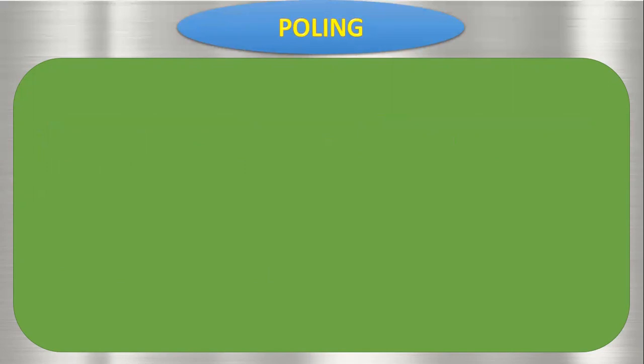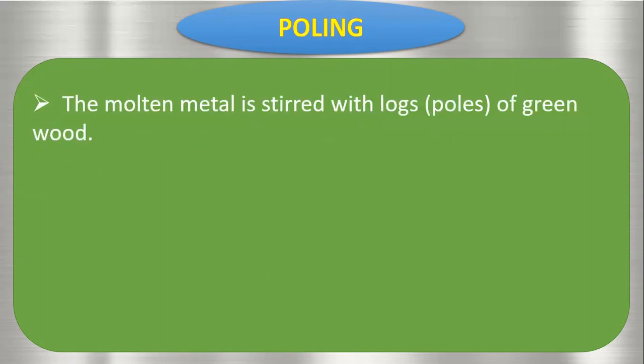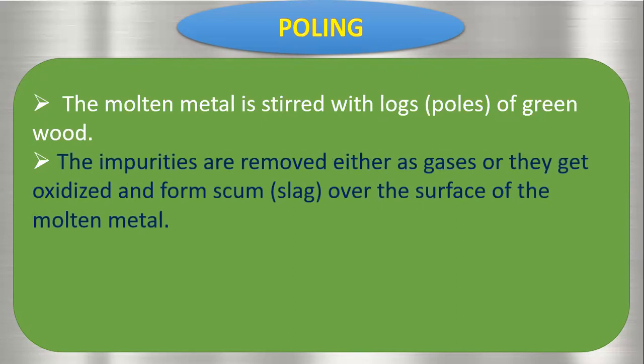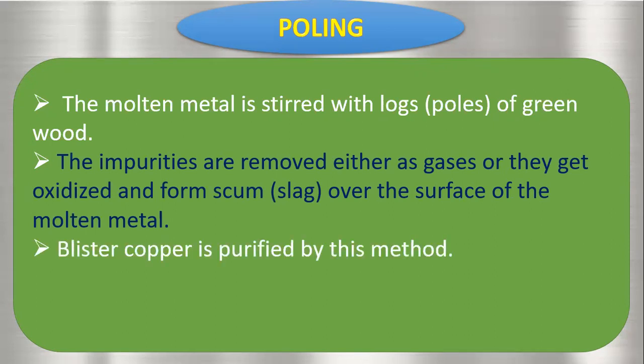The next purification method is poling. The metal is converted into molten state, then taken into a tub-like vessel and stirred with lots of green wood. The impurities are removed either as gases or they get oxidized and form a layer called scum, also known as slag. The slag is removed from the surface of the molten metal and the metal is purified. Blister copper — that is, impure copper — is purified by this method.